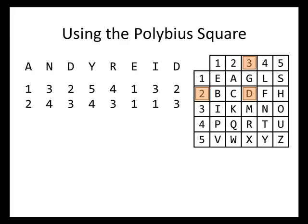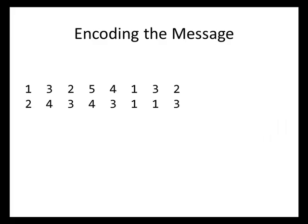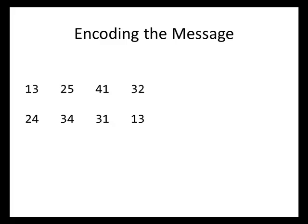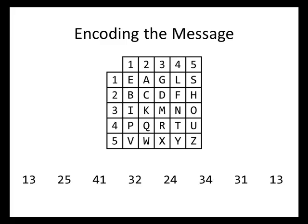Now we've got these 8 groups of numbers and those are the numbers we need to focus on. We don't need the original message anymore, and we'll set aside the Polybius square for now. What we're going to do is separate these into 2 rows of numbers, then move the second row up so it sits next to the first row, forming one big long row. We group these in pairs: 1-3, 2-5, 4-1, and so on.